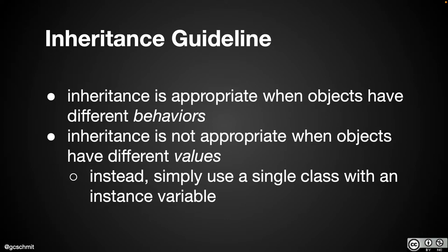If we want a turtle with a red pen and a turtle with a blue pen, we wouldn't create a subclass called RedTurtle — and we didn't. Instead, we just have an instance variable penColor that we set to red or blue. It's just a value, not a different behavior. Don't try to make everything a superclass/subclass relationship. If you're not sure, ask: what makes these things different — is it the value of an attribute? If so, you don't need inheritance. Is it a fundamentally different behavior? Then inheritance is probably appropriate.